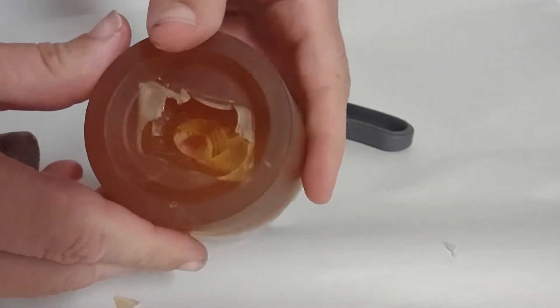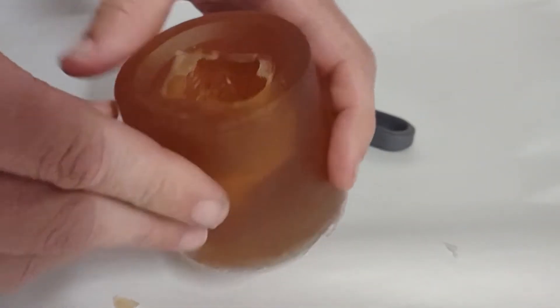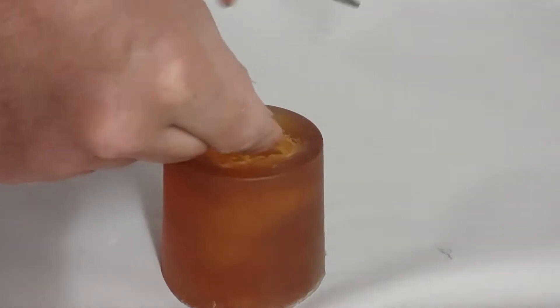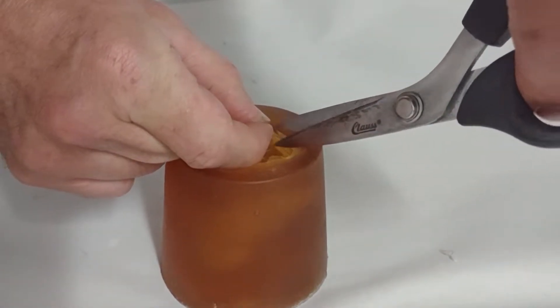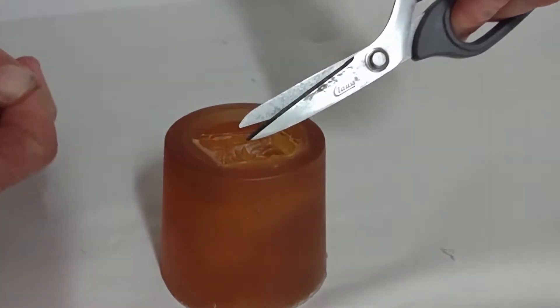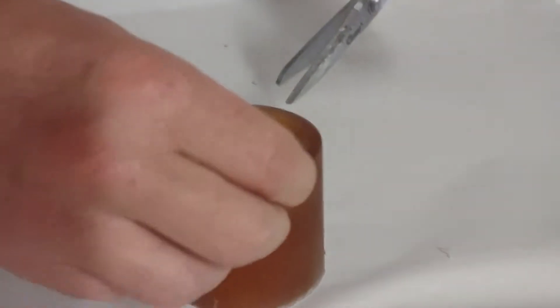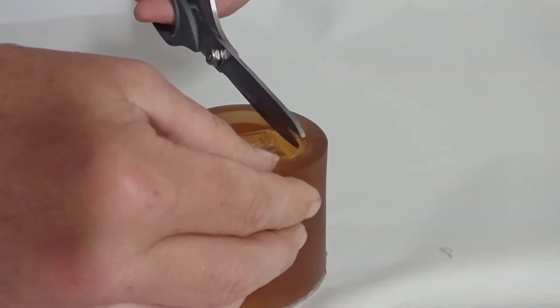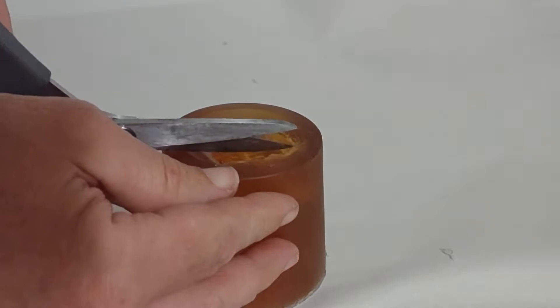After you remove the original, admire your mold cavity and make sure it is what you want. If you don't like it you can always remelt it and make another mold easily just by putting it back in the microwave. Now we are just going to clean up the edges a little bit and we will be ready to pour in the wax.